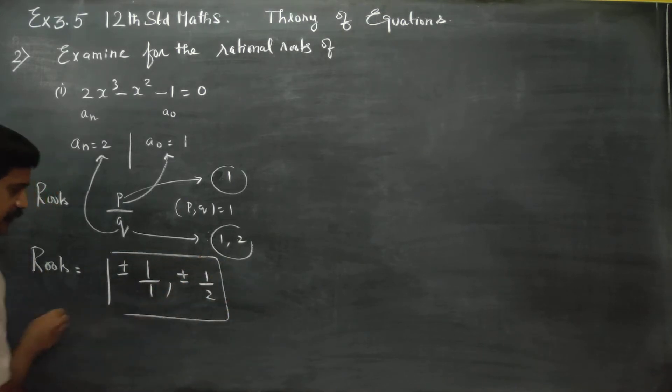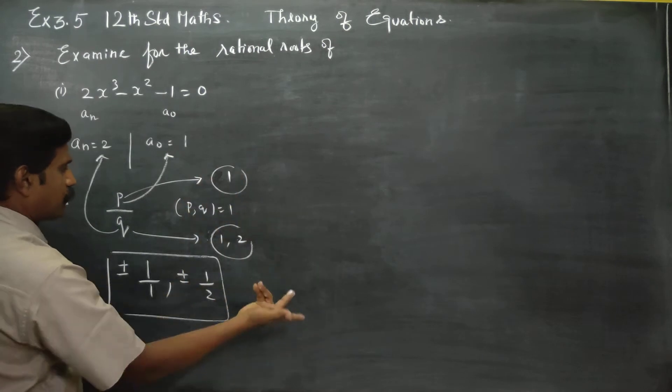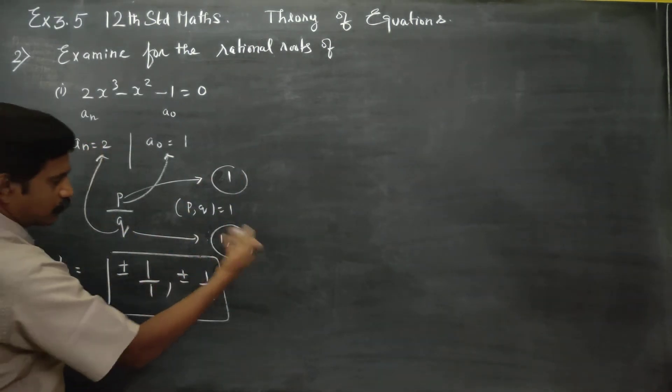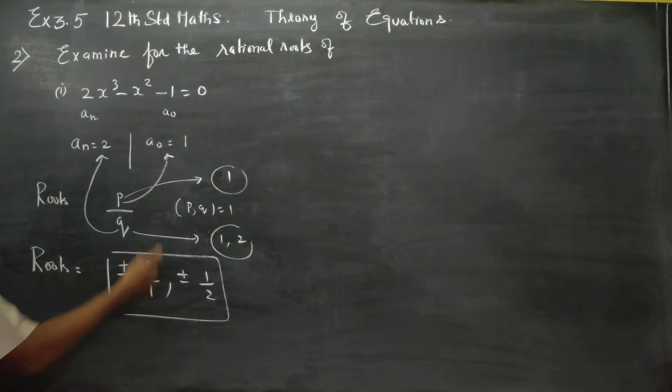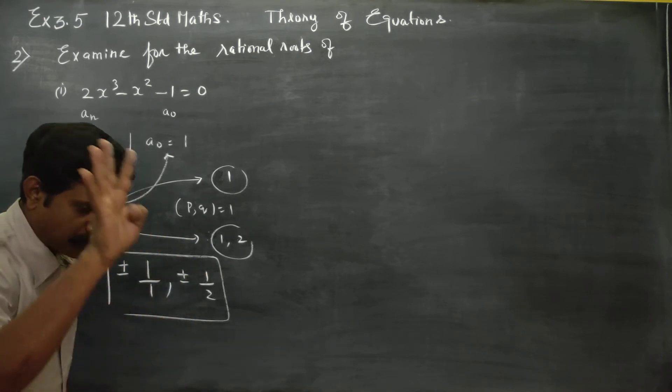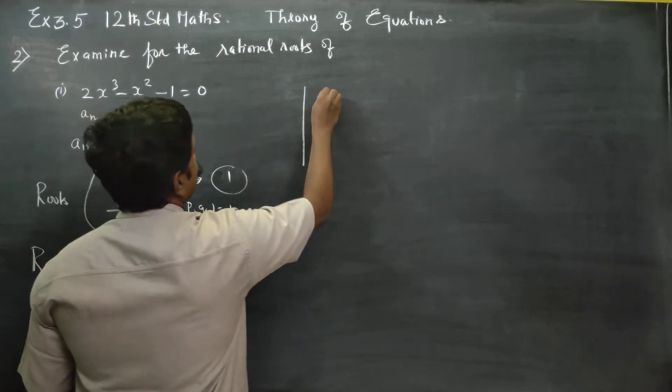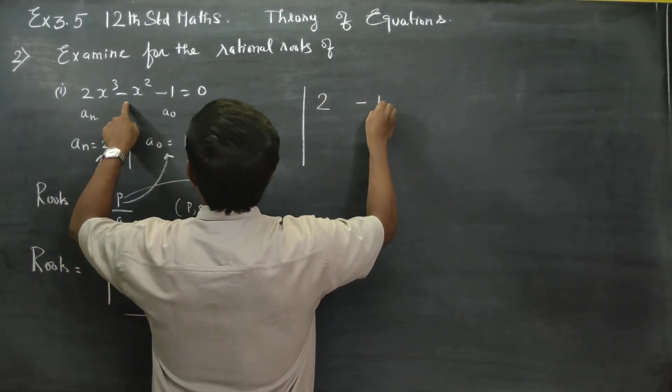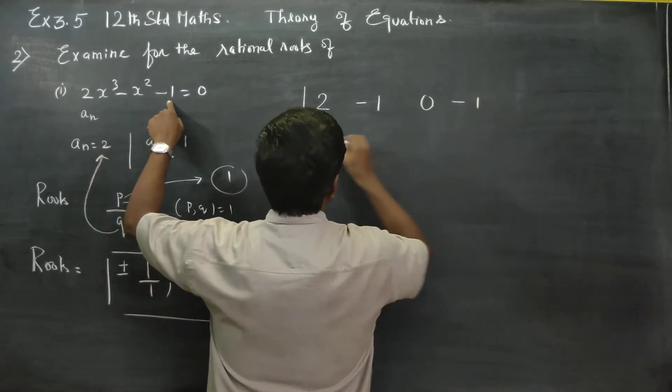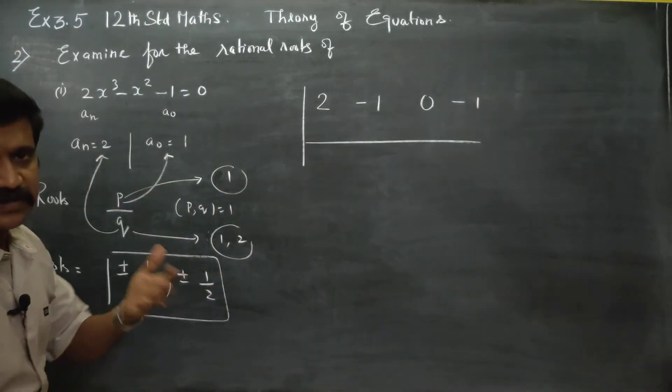In the equation, a_n is 2 and a_0 is 1. P by Q style for roots. P is factors of 1, so 1, and Q is factors of 2, so 1 and 2. P by Q style gives this by this, this by this. Plus or minus 1, plus or minus 1 by 2. Four roots are possible. Now let's see which answer comes. The equation is 2x^2 - x - 1 = 0. Let's find the roots and check which answers work.